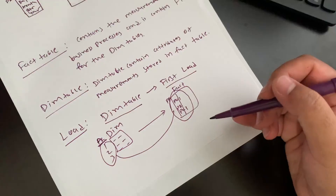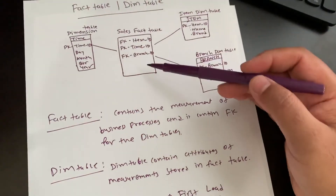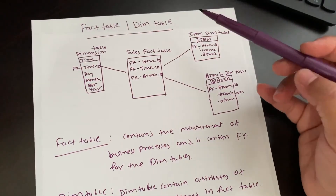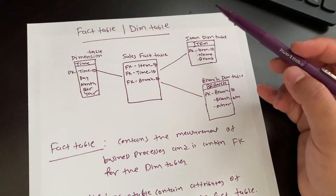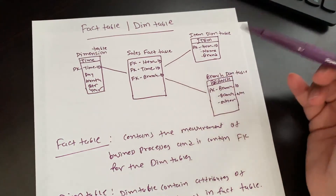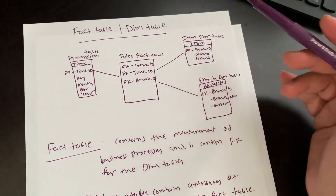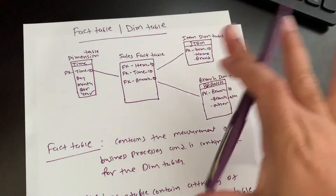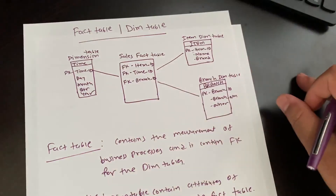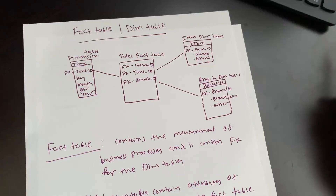Hope this clears up what is a fact table and a dimension table. This is very basic understanding for data warehousing. In interviews they often ask what is a fact table and dimension table, what kind of values each contains, and which table loads first and why. Thank you, hope you like this video, please subscribe to my channel.